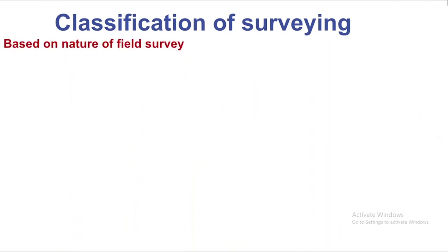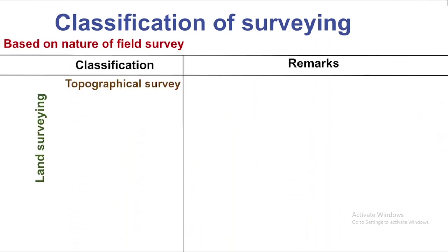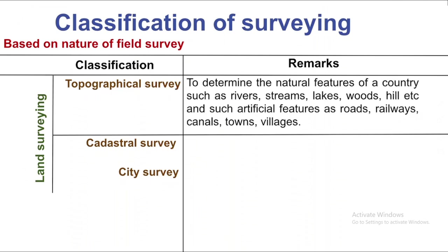Classification of surveying is very important. Based on the nature of the field survey, we classify it as: Land Survey, Topographical Survey, Cadastral Survey, and City Survey. The topographical survey determines natural features of a country such as rivers, streams, lakes, and woods, as well as artificial features like roads, railways, canals, towns, and villages.